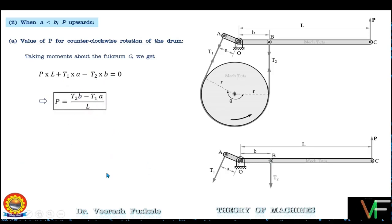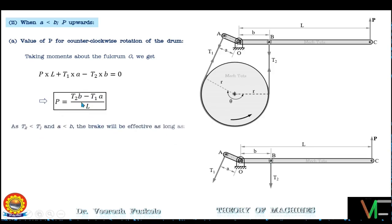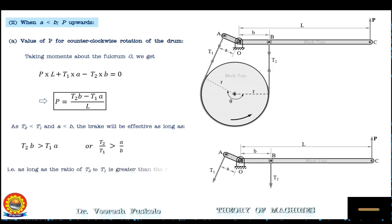Since t2 is less than t1 but b is greater than a, the brake will be effective as long as t2·b is greater than t1·a, or equivalently t2/t1 is greater than a/b. So this brake will be effective as long as the ratio t2/t1 is greater than a/b.